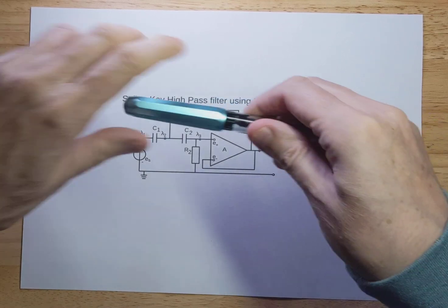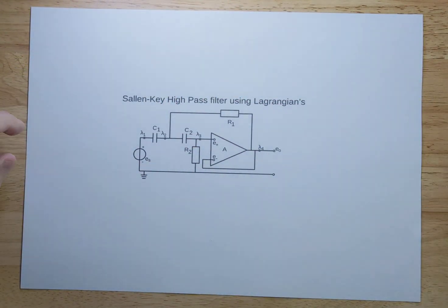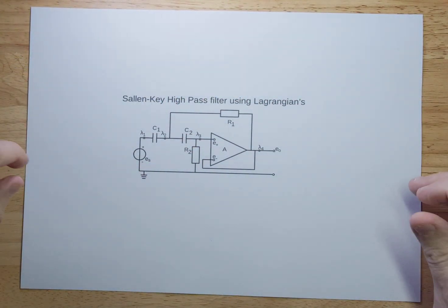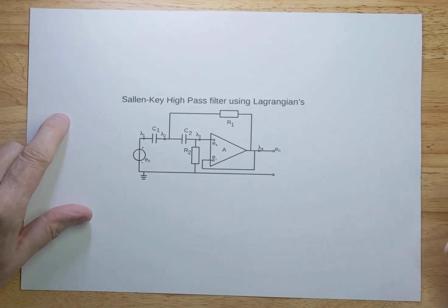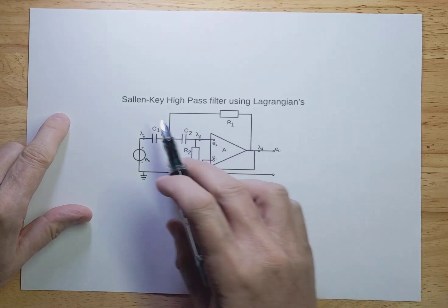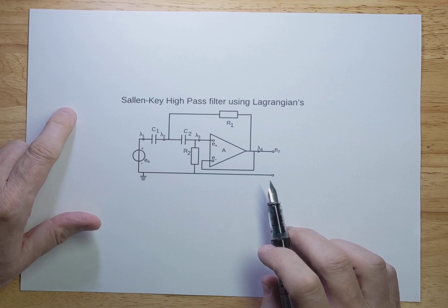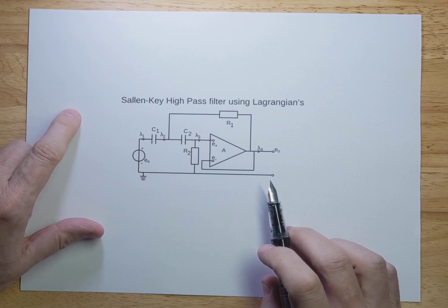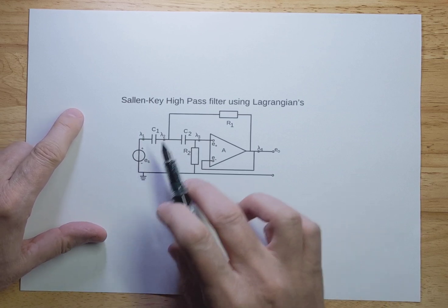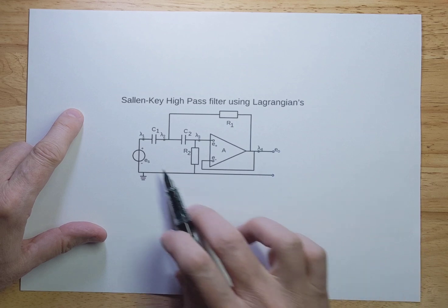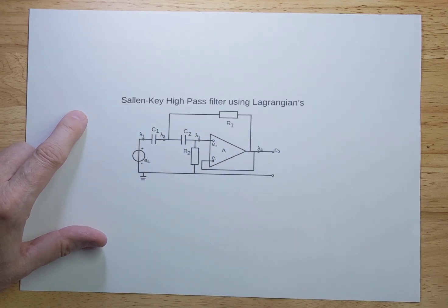Today I'm going to talk about a Sallen-Key high-pass filter, and I'm going to use Lagrangians to solve the equations of motion. We're also going to look at a Bode plot to see what the frequency transfer function is and what the frequency response will be.